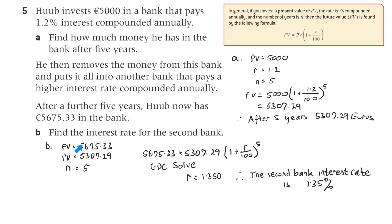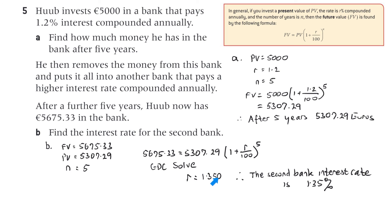For Part B: the future value is €5,675.33. The present value is the €5,307.29 we just calculated, because Hub moved his money after the first five years — that becomes the present value for the second part. The period is a further five years. Putting it all in and using the solve function, we get R = 1.35%. The second bank's interest rate is 1.35%.